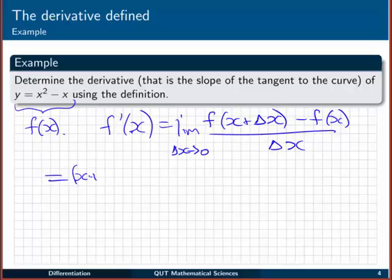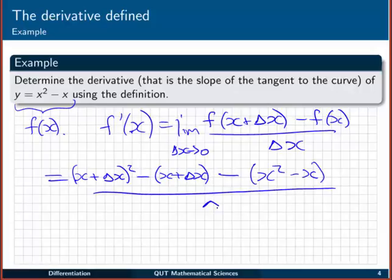So we have x plus delta x all squared, take away x plus delta x. Then we're going to subtract f of x, which is just x squared minus x. Divide all of that by delta x.